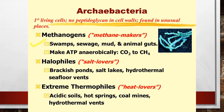Methanogens make ATP anaerobically, liberating or converting CO₂ to methane (CH₄). The next type is halophiles — the salt lovers — which survive in extreme salty areas such as brackish water, salt lakes, hydrothermal vents, and seafloor wells. The third type is extreme thermophiles — the heat lovers — which survive in high-temperature environments such as acidic soil, hot springs, coal mines, and hydrothermal wells.